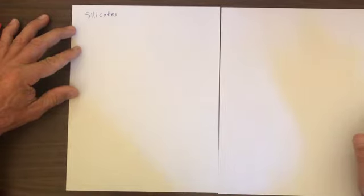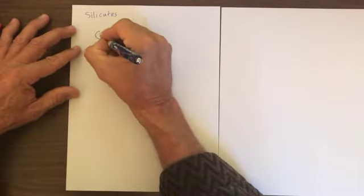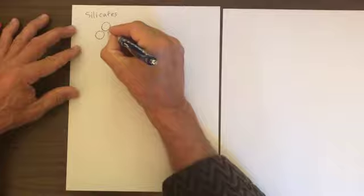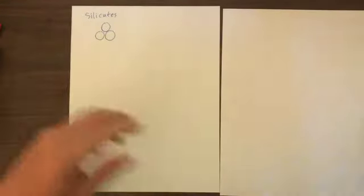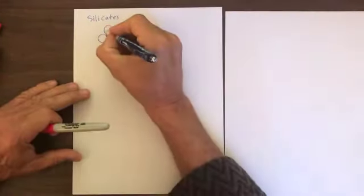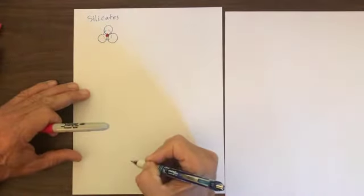All the silicates are built around tetrahedral structures, usually a silicon surrounded by four oxygens. We can show that this way — there's the oxygen, the big oxygen, a second one here, and a third one there. And then the silicon, which is a small cation, sits in here. And the final oxygen would go on top, like that. And that's the silicate tetrahedron.